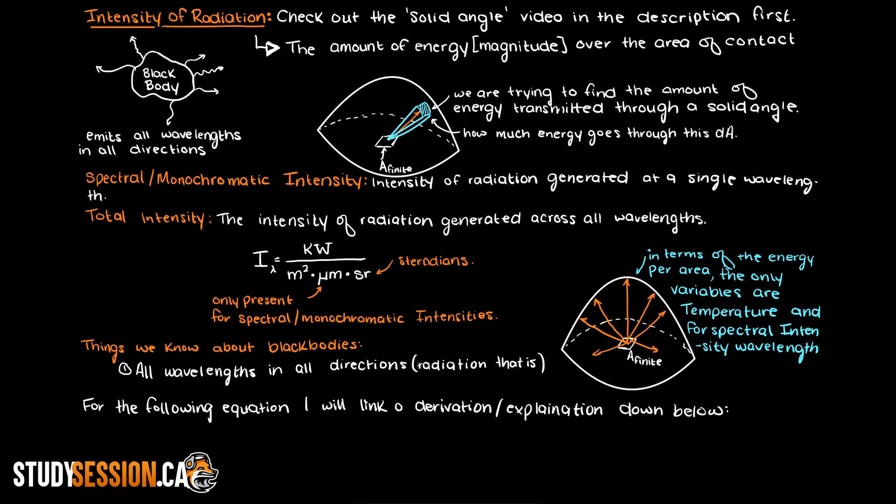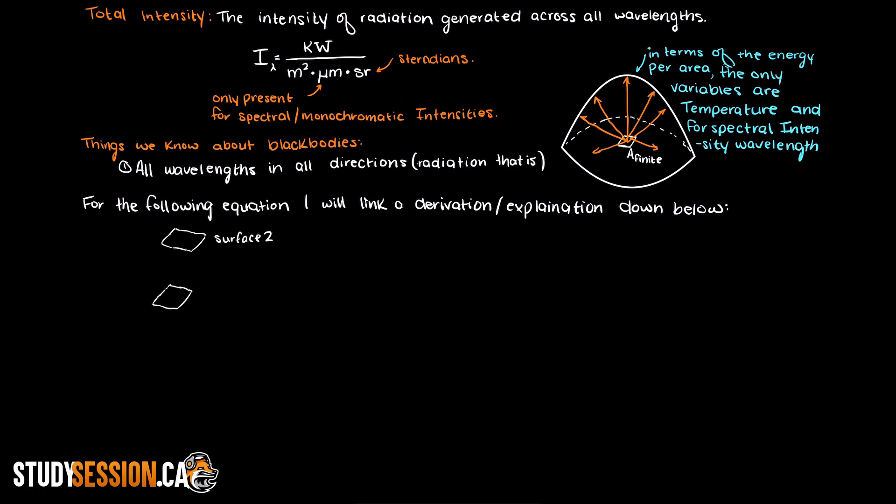For this, I will leave a link in the description below for a full derivation. However, the intensity of a black body normal to a given surface and in a vacuum environment can be written as Planck's distribution law, which I have written here, divided by pi.